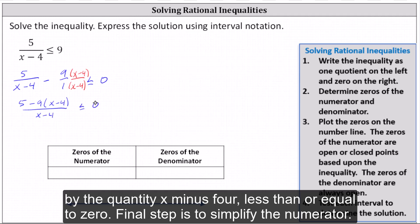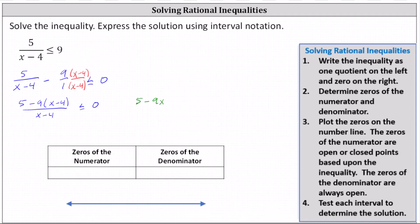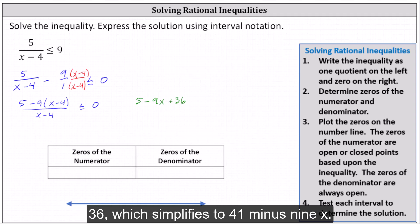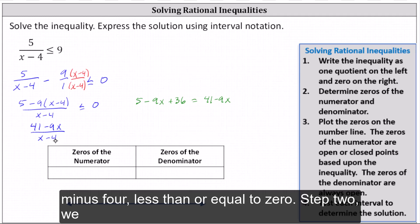The final step is to simplify the numerator. The numerator is five minus nine x plus 36, which simplifies to 41 minus nine x. We can now write the inequality as 41 minus nine x divided by the quantity x minus four, less than or equal to zero.